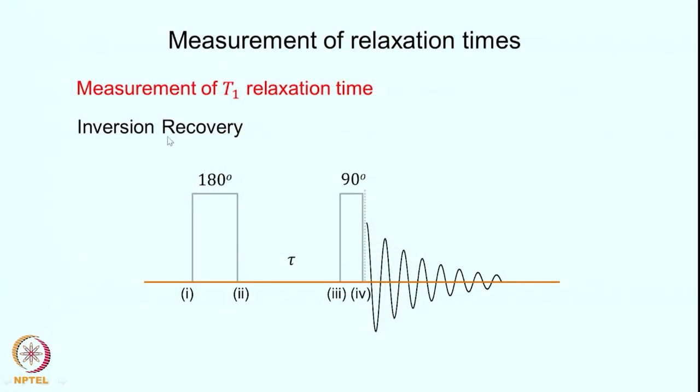We now switch to a different topic: measurement of relaxation times. We had discussed relaxation times earlier in the first few lectures and showed the importance of T1 and T2 relaxation in determining the evolution of the magnetization — recovery along the Z axis and decay of magnetization in the transverse plane. These are important parameters of individual spin systems and we must know how to measure T1 and T2. The most common technique for measurement of T1 is the so-called inversion recovery experiment, and we had already looked at some application of this strategy in water suppression.